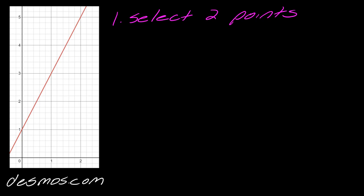We're going to look at just a few general lines to get used to how we do this. These are some graphs generated from Desmos.com. The first thing you want to do is select two points on the line — two points that you can easily read. So this is one point: I can easily see 5 is on the y-axis and 2 is on the x-axis. Then I choose this other point — I can see this is 1 on the y-axis and if I come down to the x-axis where this intersects, it would be at zero.